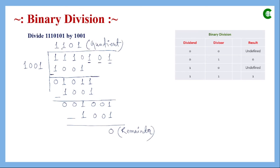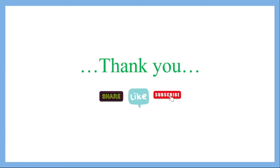The remainder of this division is 0 and the quotient is 1101. Note that it is not mandatory for every binary division to have remainder 0 — it may have some other value. This class covered the rules of binary addition, subtraction, multiplication, and division. I hope you will be able to solve binary arithmetic problems. Thank you.